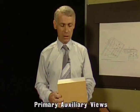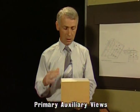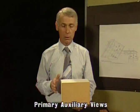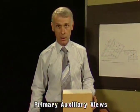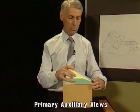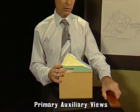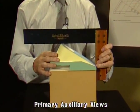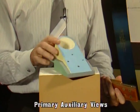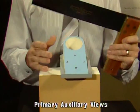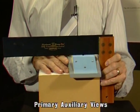In conventional orthogonal projection, we have a front elevation and all the other faces go off at 90 degrees to it. Occasionally we have a component with a major surface that is inclined to at least one of the principal planes, but a feature of primary auxiliary views is that the surface must be 90 degrees to at least one of the principal planes.